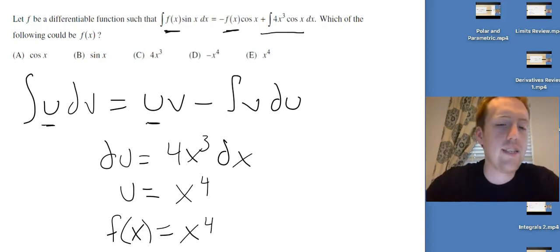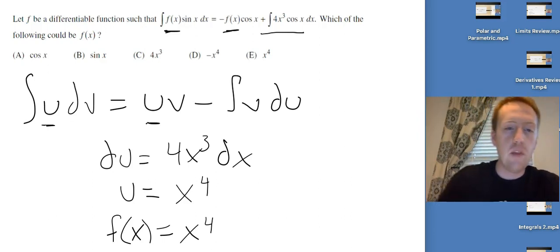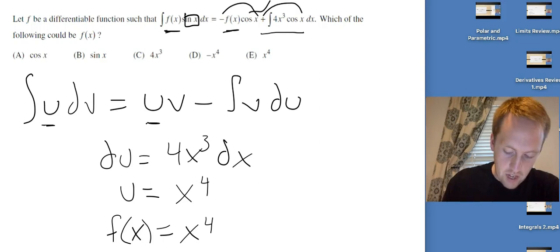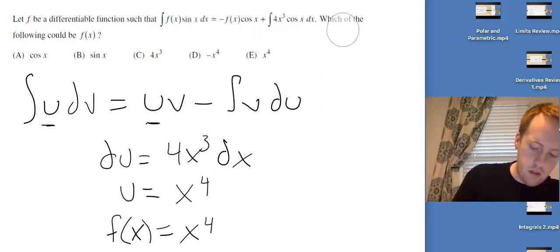You might be wondering, well, why isn't it negative x^4? Because we do see some negative signs floating around. But the only reason we see that negative sign floating around is because it's the antiderivative of sin(x), negative cos(x). The negative signs were going with the cosine. That's why that negative sign showed up. So x^4 is going to be the answer for that one.